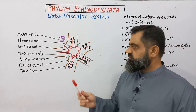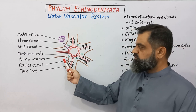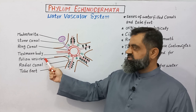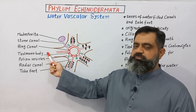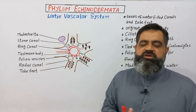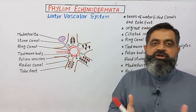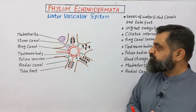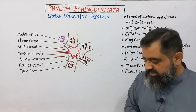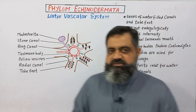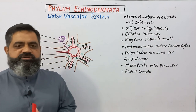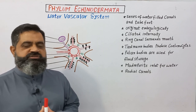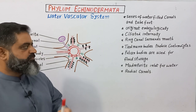Along with this system, there are certain parts of the body known as Polian vesicles and Tiedemann bodies, which have specific roles related to the vascular system. Now let's discuss the water vascular system in detail with some points.